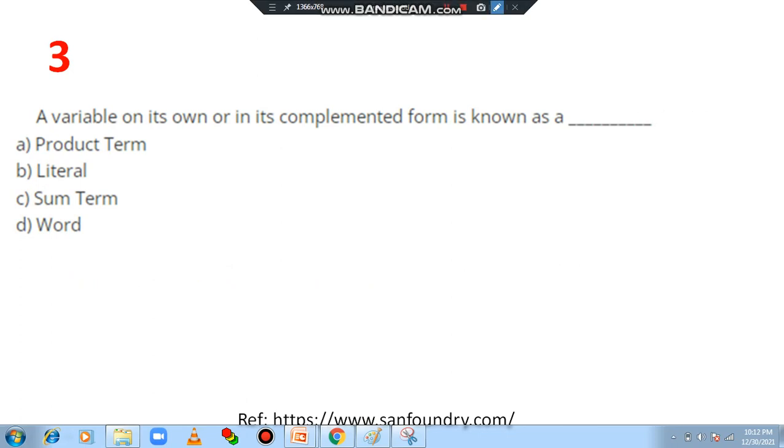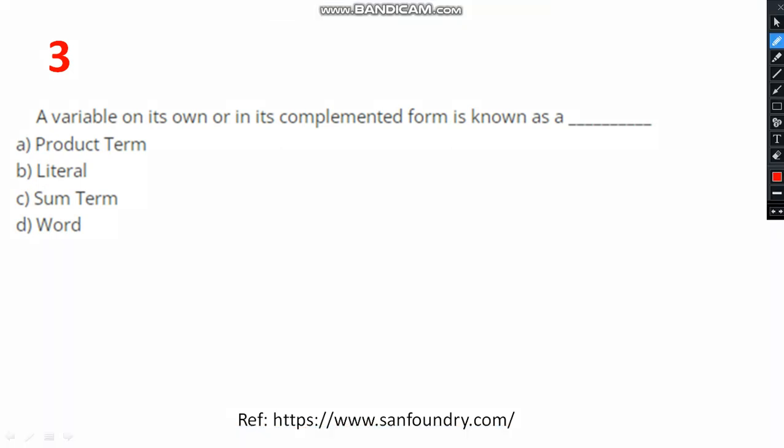Moving on to the third question. A variable on its own or its complemented form is dash. Product term, literal, sum term, word. Actually, a variable on its own or its complemented form is known as literal. I have to select option B. Option B is the correct answer.